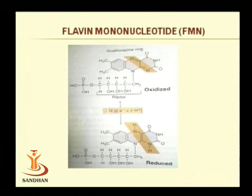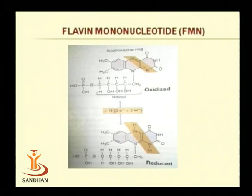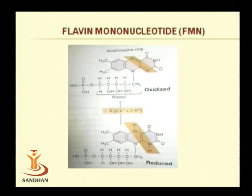The first carrier is flavoprotein, which includes FMN (flavin mononucleotide) and FAD (flavin adenine dinucleotide). They are derived from the yellow prosthetic group riboflavin. The active sites are shown in yellow, and it shows that two electrons and two protons — equivalent to two hydrogen ions — are accepted by FMN and FAD.